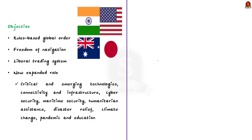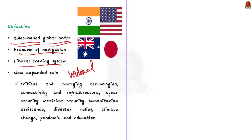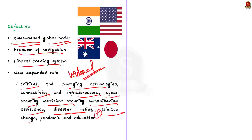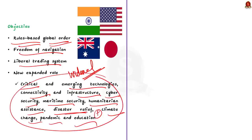The main objective of the Quad is to secure a rules-based global order and ensure freedom of navigation and a liberal trading system. Through subsequent meetings, the objective of Quad has widened. The leaders now exchange views on contemporary global issues, critical and emerging technologies, connectivity and infrastructure, cyber security, maritime security, humanitarian assistance, disaster relief, climate change, pandemic, and education.